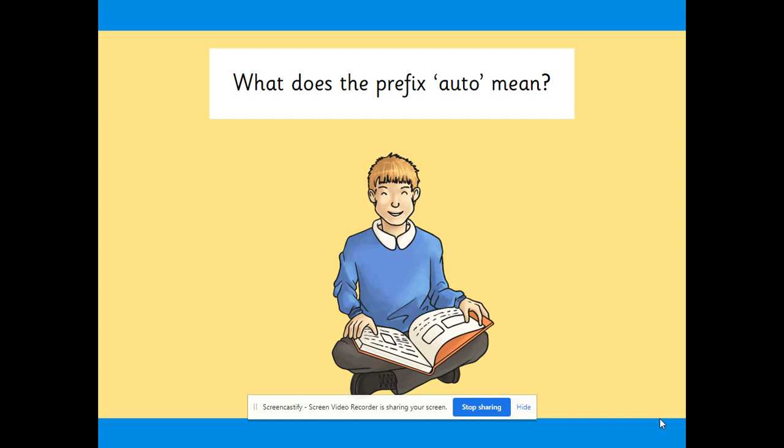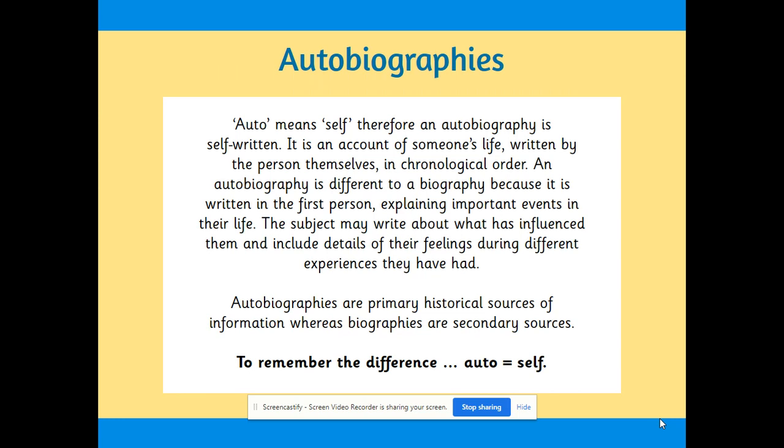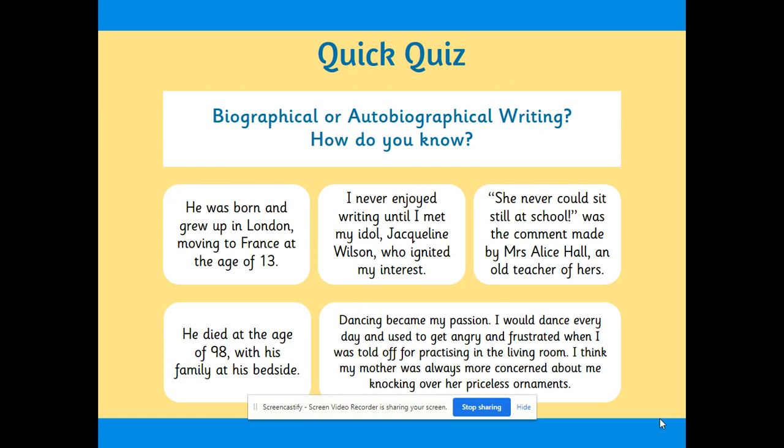So what does the prefix 'auto' mean? Auto means self. Therefore, an autobiography is self-written — it is an account of someone's life written by the person themselves. An autobiography is different from a biography because it is written in the first person, explaining important events in their life. The subject may write about what has influenced them and include details of their feelings during different experiences. Autobiographies are primary historical sources of information, whereas biographies are secondary because they are not written by that person.